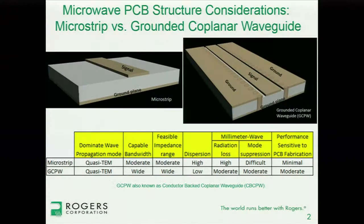So a brief comparison — and this is actually somewhat subjective and relative — between the microstrip and the grounded coplanar waveguide. They both have the same propagation mode, and that's a quasi-TEM wave. Some of the reason for this is because as the wave propagates on the circuit, the fields exist in air and also the substrate. Because of that, you can't get a pure TEM wave; you get a quasi-TEM wave. The air also causes some issues with dispersion and other effects.